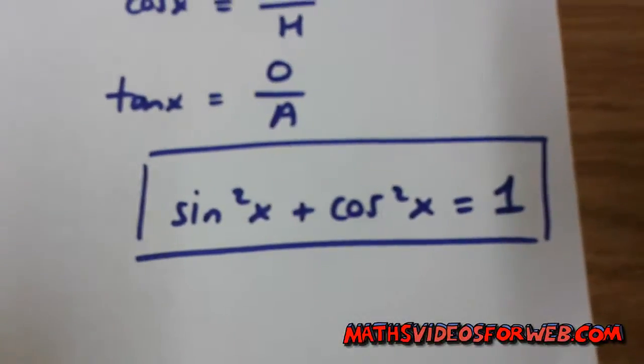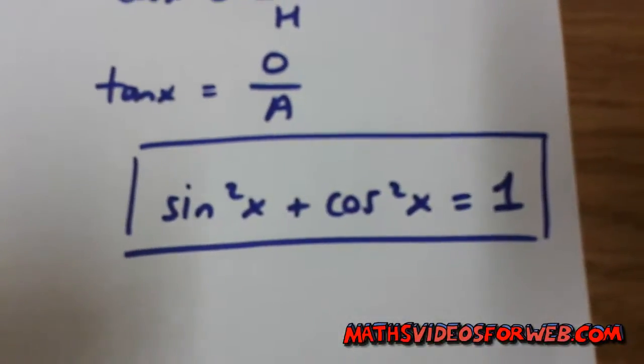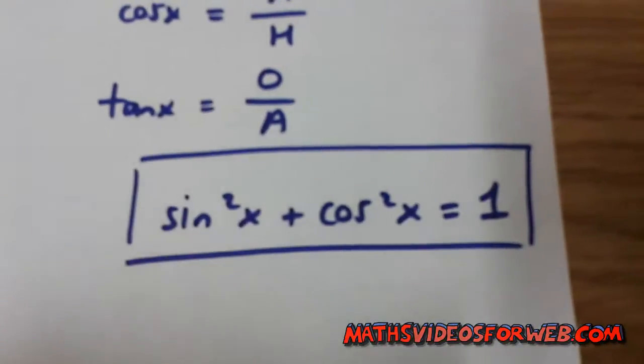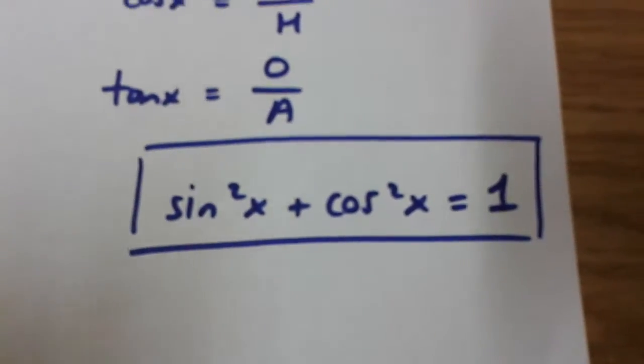Hi, in this video I'm going to prove to you that sin x squared plus cos x squared is equal to 1, without using the unit circle.